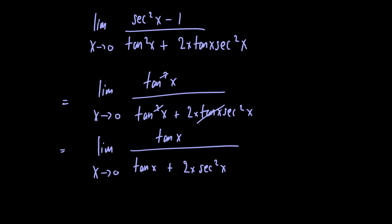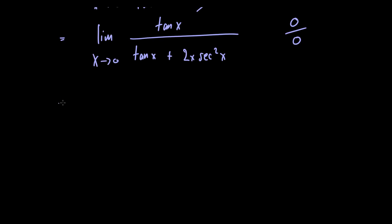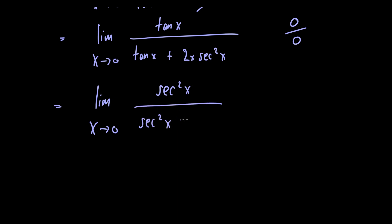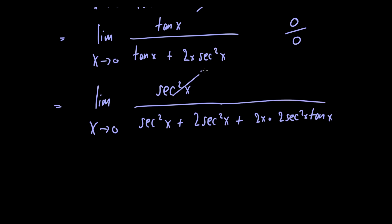If we let x go to 0 in this expression, the numerator is 0 and the denominator is also 0, so we apply L'Hôpital's Rule again. This gives the limit as x goes to 0 of secant squared of x divided by secant squared of x plus 2 times secant squared of x plus 2x times 2 times secant squared of x times tangent of x. As x goes to 0, this becomes 1 over 1 plus 2, which equals 1 over 3.